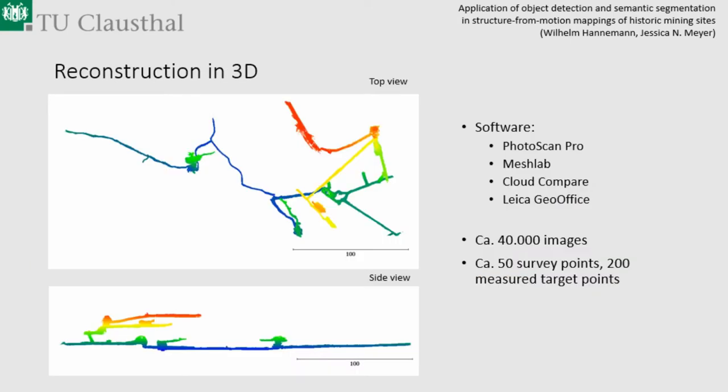The results from last year are this 3D reconstruction. We are still in the phase of dense matching and creating high-resolution 3D models, but in the sparse point cloud you can see there are several hundred meters of tunnels and some water wheel chambers. We used PhotoScan Pro, MeshLab, CloudCompare, and Leica GeoOffice, and now we have 40,000 images of this mine with positions in 3D and about 200 measured target points from 50 surveyed station points.